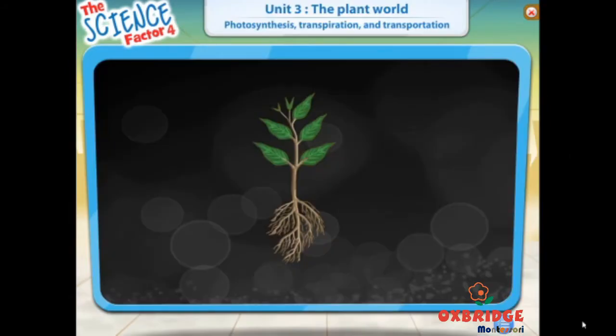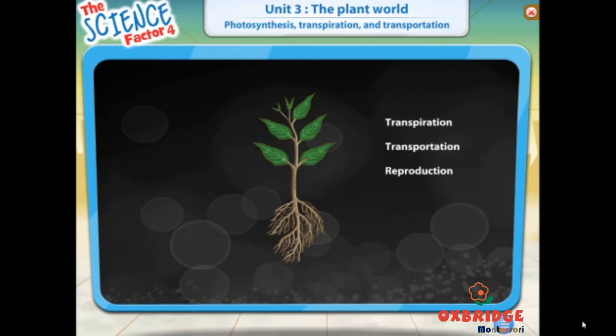To a plant, four main processes are very important in order to live, grow and reproduce. Can you name the first one? That's right! It's photosynthesis. The other three are transpiration, transportation and reproduction.